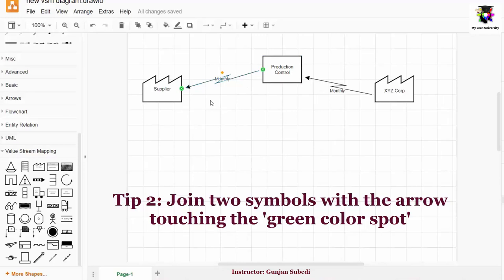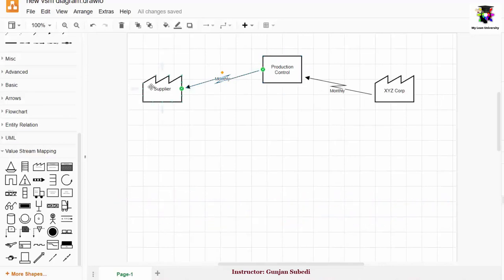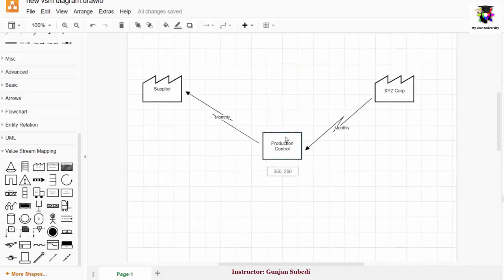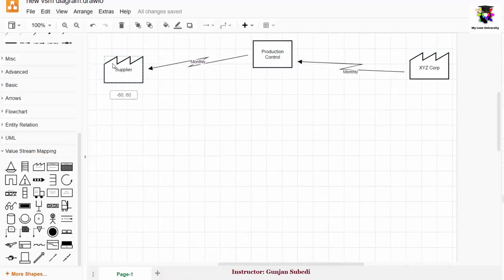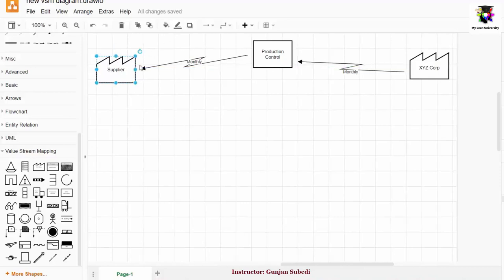Now the reason why I am trying to connect the arrows with the green color marks here is because if I later want to increase or decrease the size of this map or if I want to adjust the symbols to some other places, then the rest of the symbols or these arrows will not be disturbed. Suppose here if I move the production control or if I move the customers or if I move the supplier symbol, it won't affect the arrows over here.